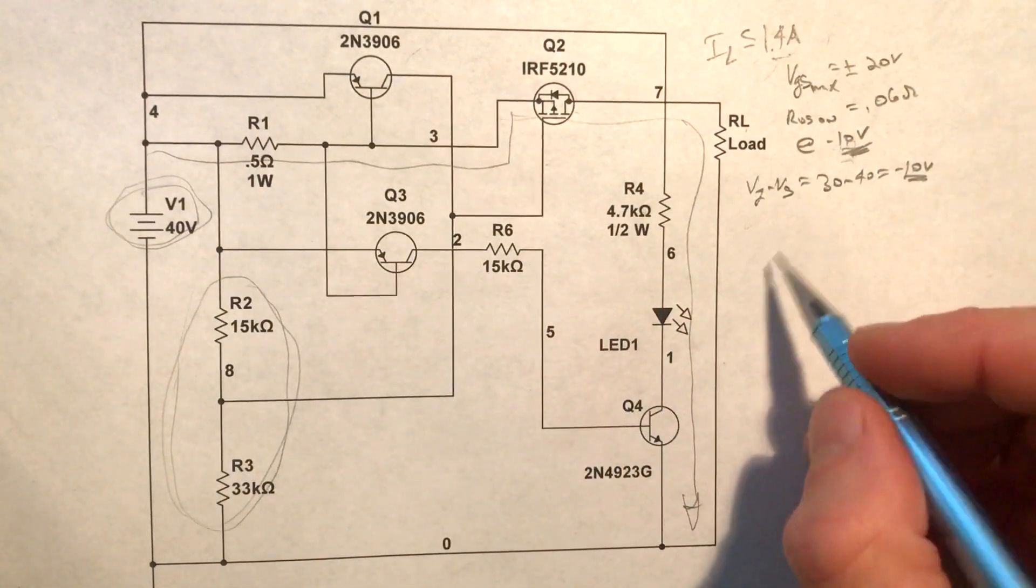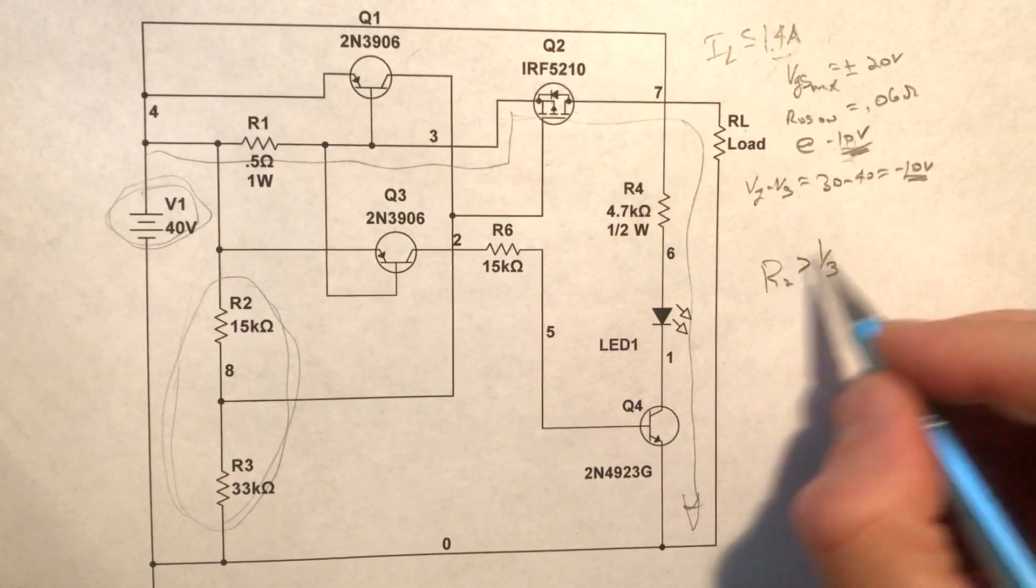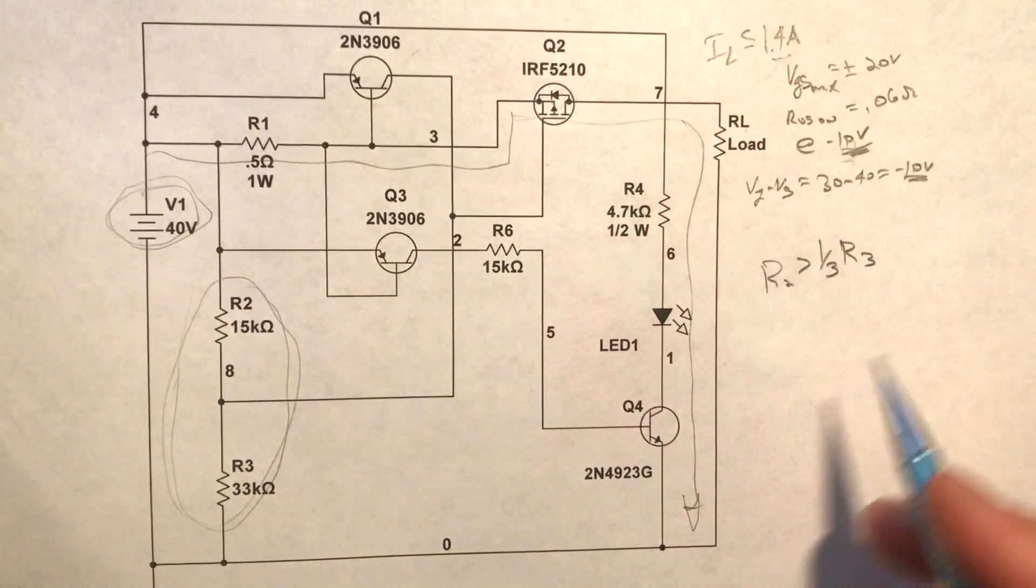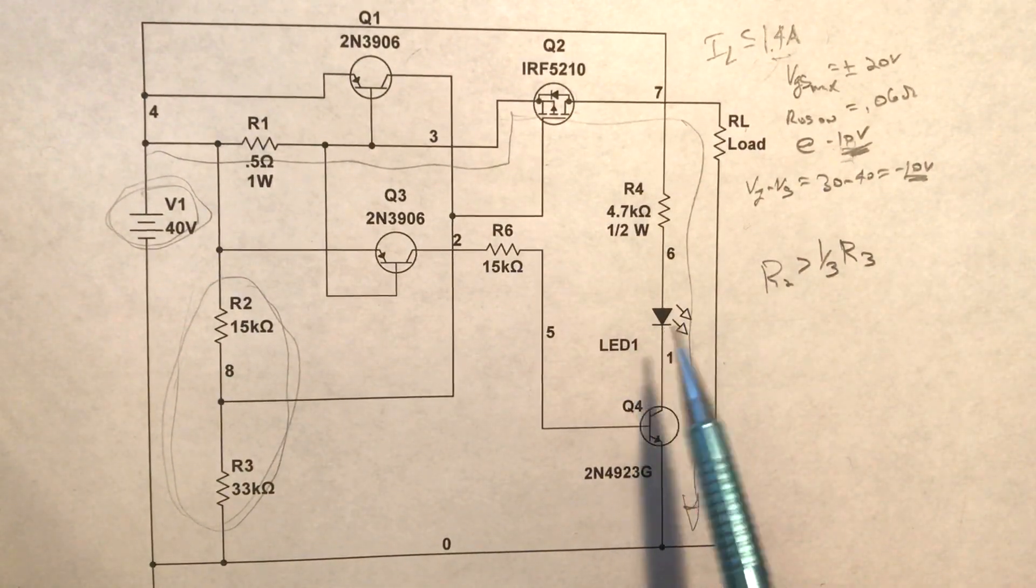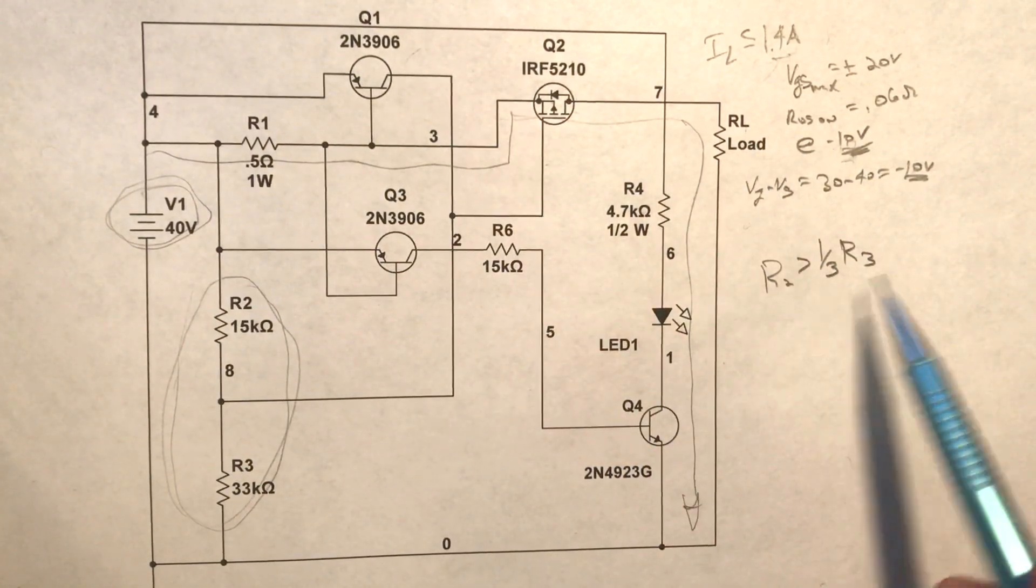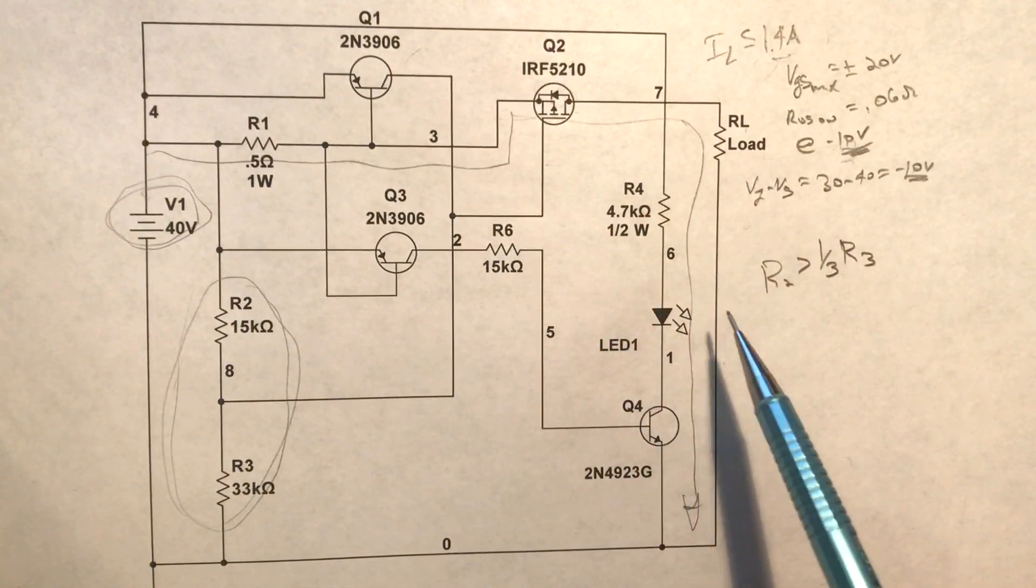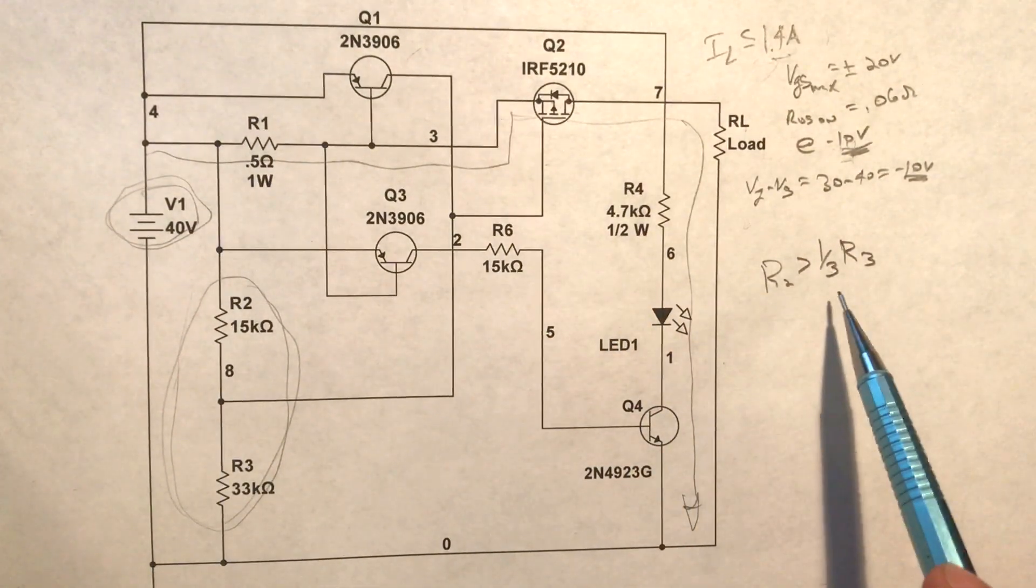So if you go through some algebra here, what you come up with is R sub 2 has to be greater than or equal to—I'm sorry, greater than 1 third R sub 3. The website link that I have, you can go there and I go through all the derivations for all of this in a lot more detail. I'll show all the equations and that URL will also show up at the end of this video.